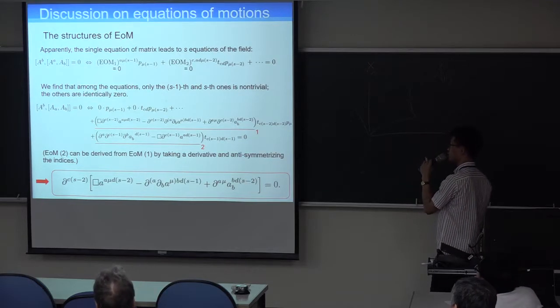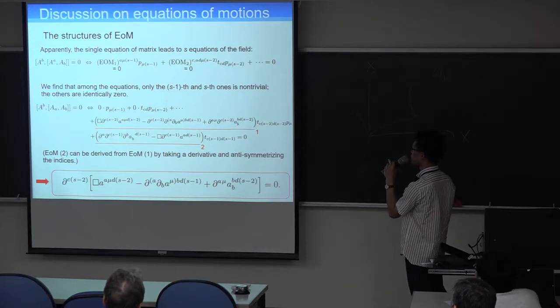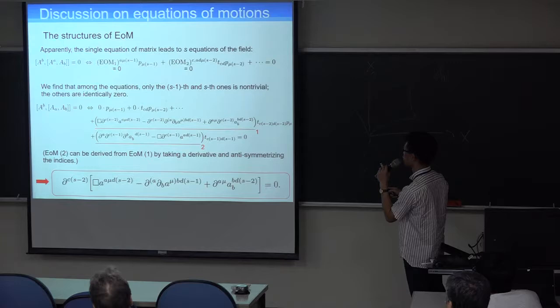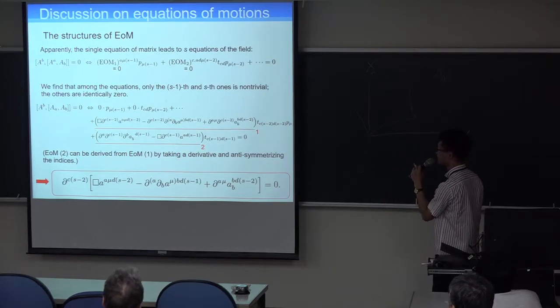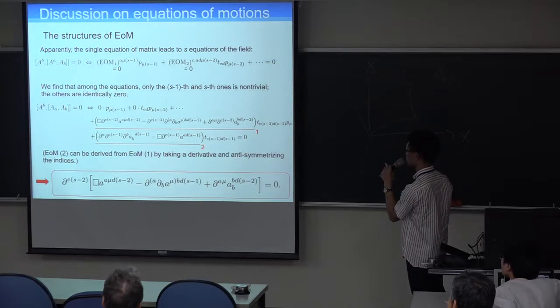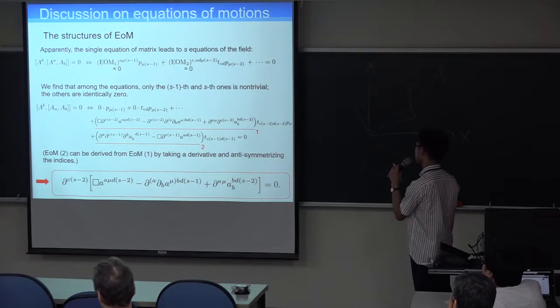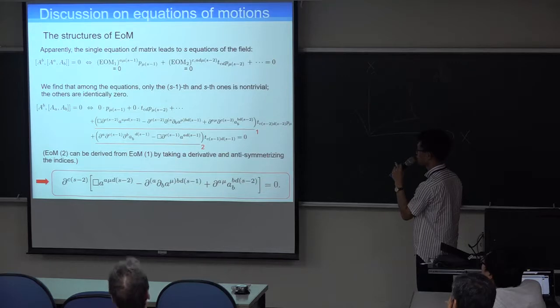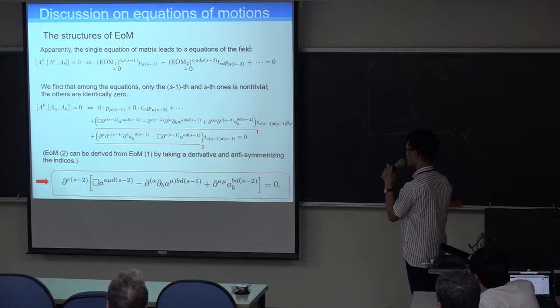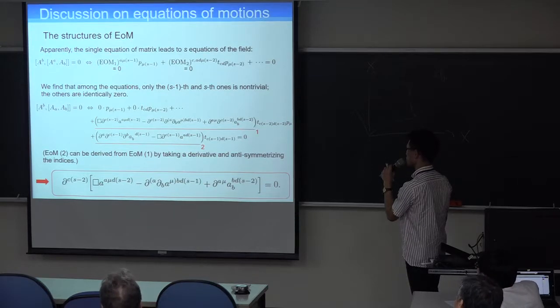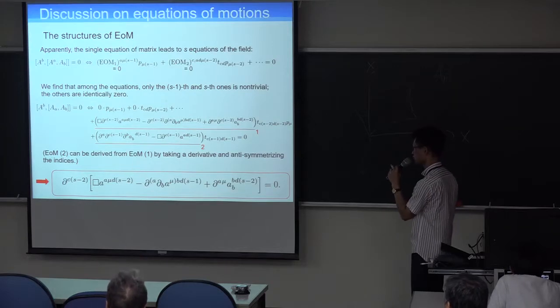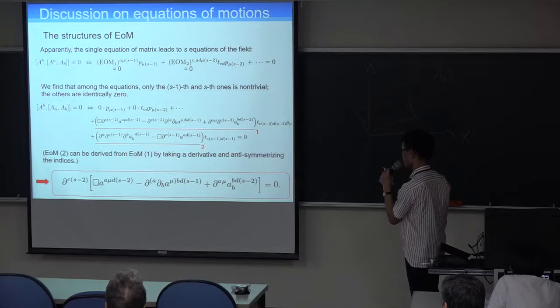What about the equation of motion? Apparently, the single equation of the matrix is related to S-equations of the field. Because each term of derivatives must vanish. But we find that among equations, only the S-1s and S-1s is non-trivial. The others are identically zero. And furthermore, the S-1s equations can be derived from S-1s by taking a derivative and anti-symmetrizing the indices. So the equations of motion for matrices is interpreted as that single equation for the fields.